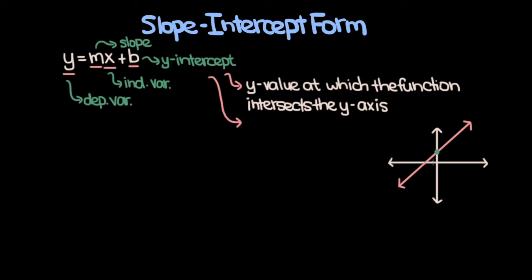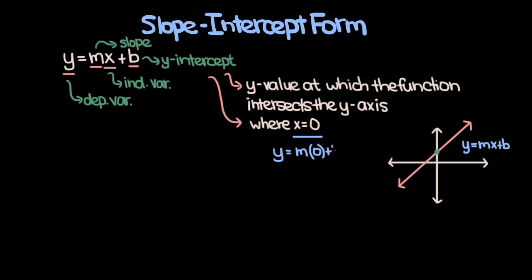Another thing you should notice about the y-intercept is that it is where x is equal to 0. So if we plug x equals 0 into our equation y equals mx plus b, we get y equals m times 0 plus b, and m times 0 is 0. So the y-intercept for a line in slope-intercept form will just be b, and this point will have the coordinates (0, b).